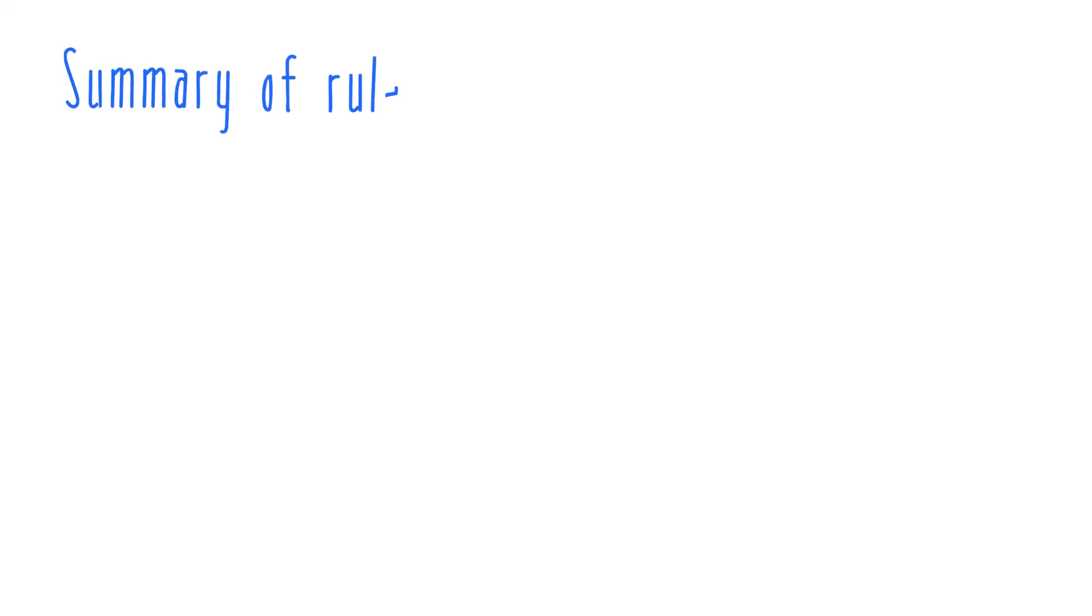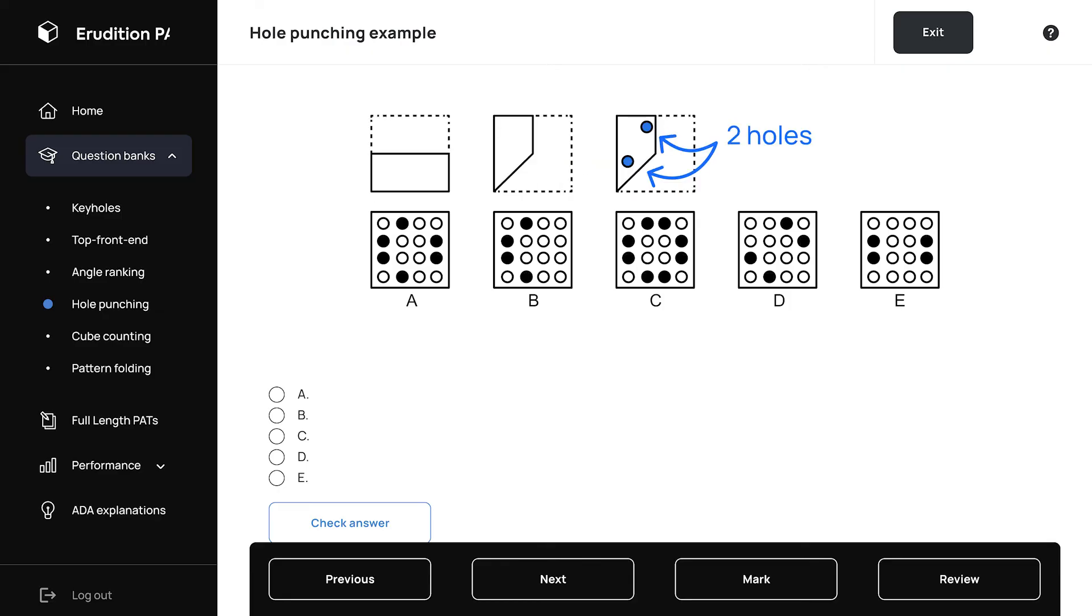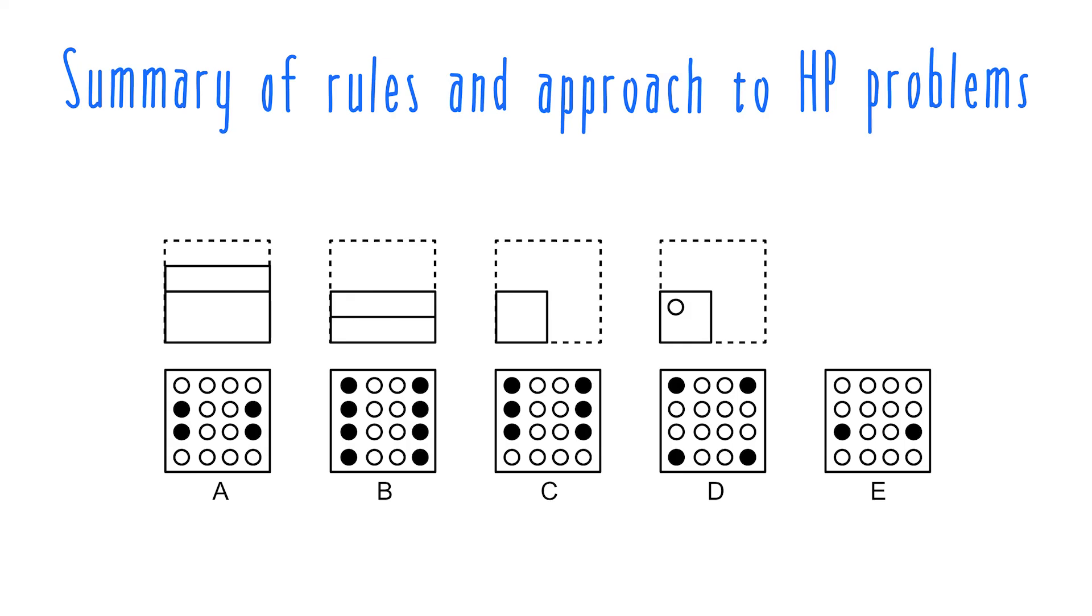Here's a summary of the rules of hole punching problems and how to approach them on your DAT exam. Hole punching problems show you a sequence of paper folding steps followed by at least one hole punch. There may also be more than one hole punch in the last step, or half holes created by holes being punched on a paper fold crease.